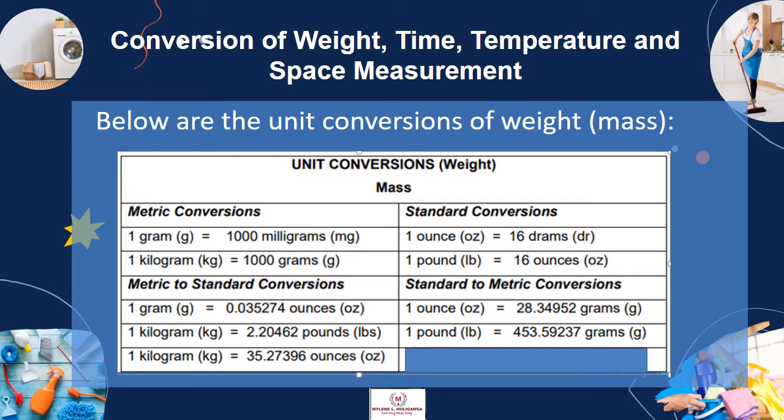The following are the unit conversions of weight or mass. Metric conversions: 1 gram is equal to 1,000 milligrams; 1 kilogram is equal to 1,000 grams; 1 kilogram is equal to 0.035274 ounces; 1 kilogram is equal to 2.20462 pounds; 1 kilogram is equal to 35.27396 ounces. Standard conversions: 1 ounce is equal to 16 grams; 1 pound is equal to 16 ounces. Standard geometric conversions: 1 ounce is equal to 28.34952 grams, and 1 pound is equal to 453.59237 grams.